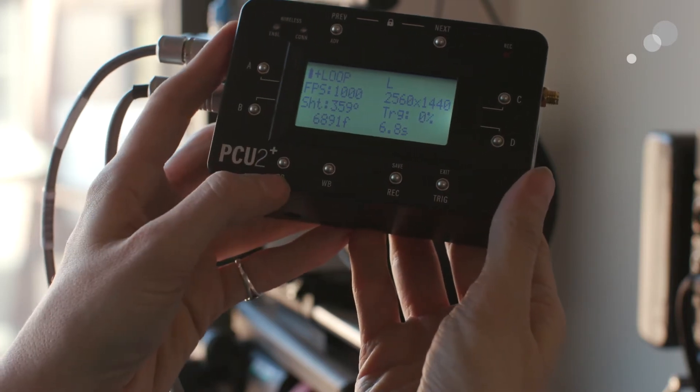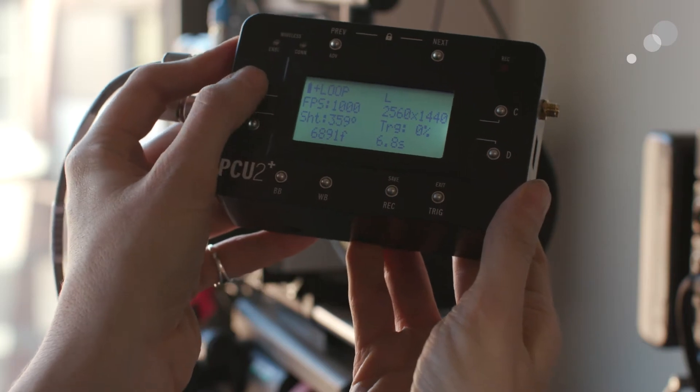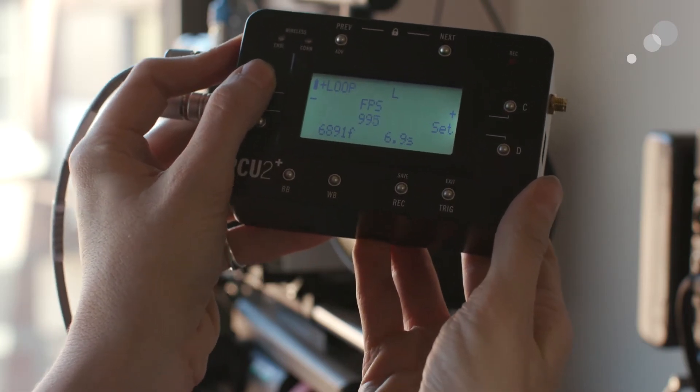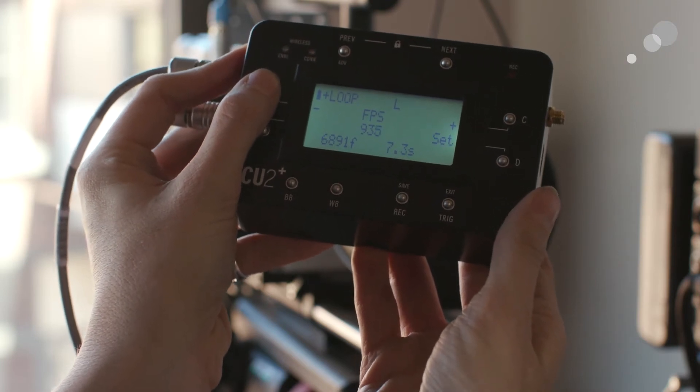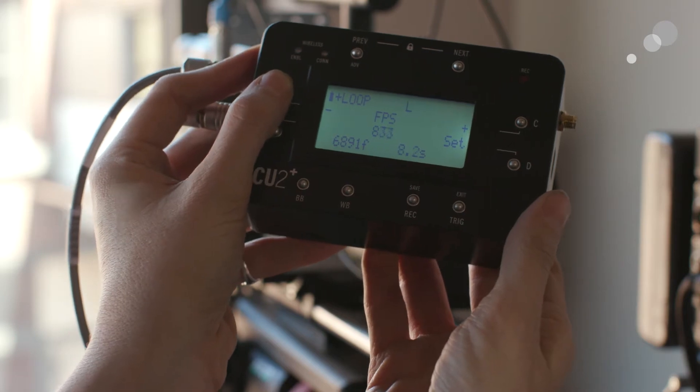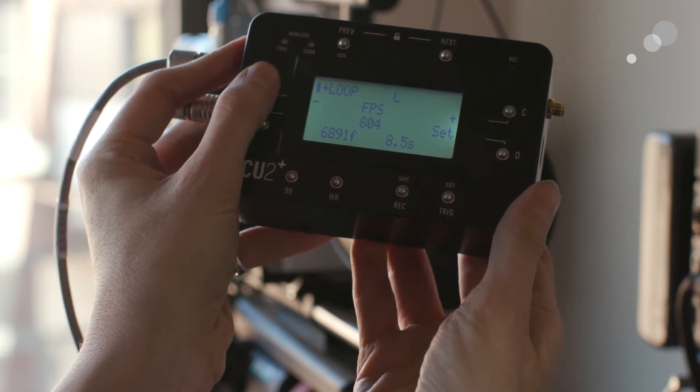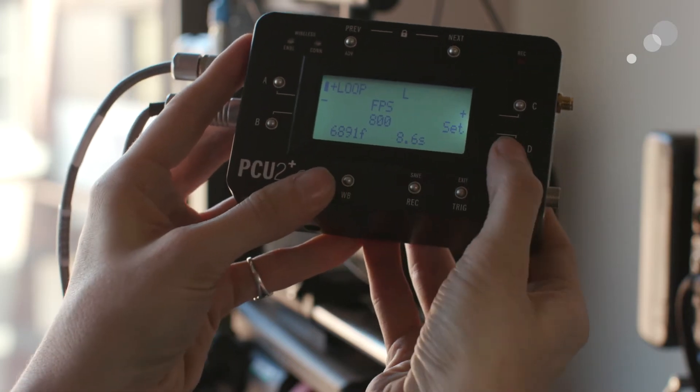I have my frame rates here. It's set to a thousand right now. Let's say I wanted to lower that for this shot. I can hit the corresponding button, and again, minus that. Let's go to 800, let's say. It'll change that on both of these cameras since I'm connected and controlling both. What's also really nice is at the bottom, it's telling me how many frames that is and also how many seconds of record time I have